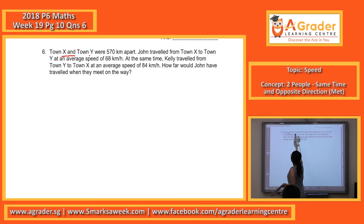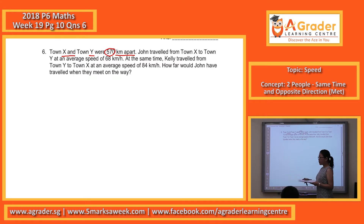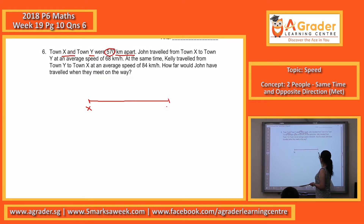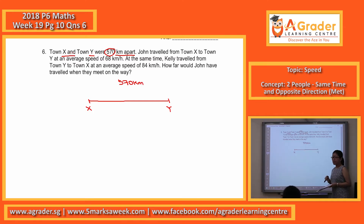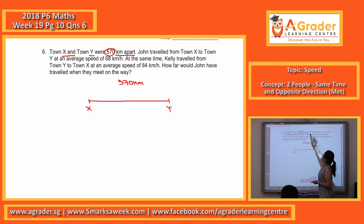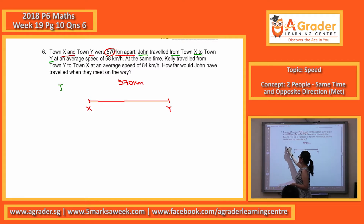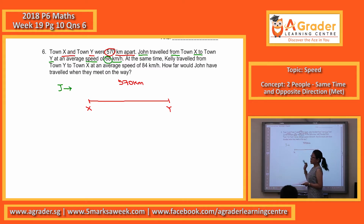X and Y were 570 km apart. I start off drawing X, Y, 570 km. John travelled from X to Y at an average speed of 68 km per hour.